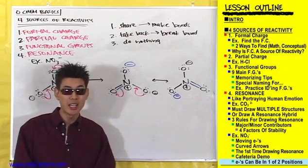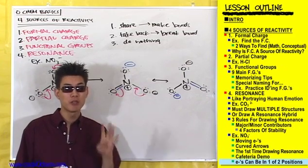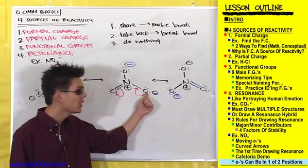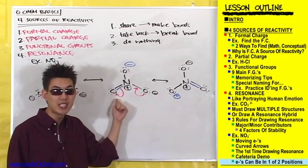It's to preserve the octet rule. You can't have more than four bonds to an atom, and that's what would happen if you didn't simultaneously make this bond while breaking this bond.